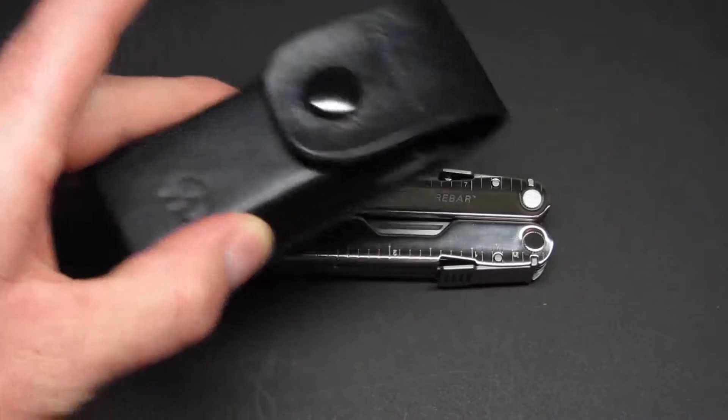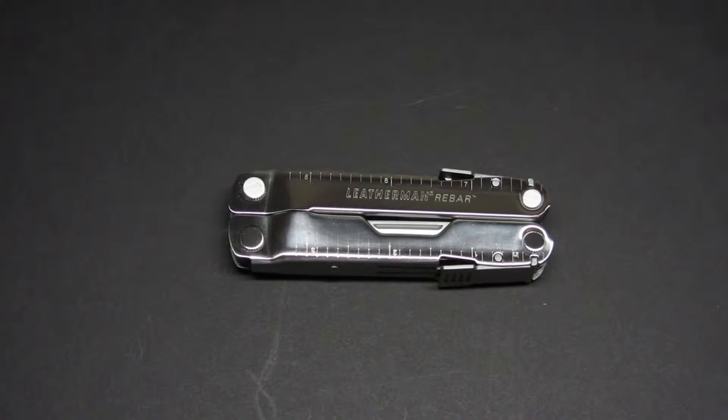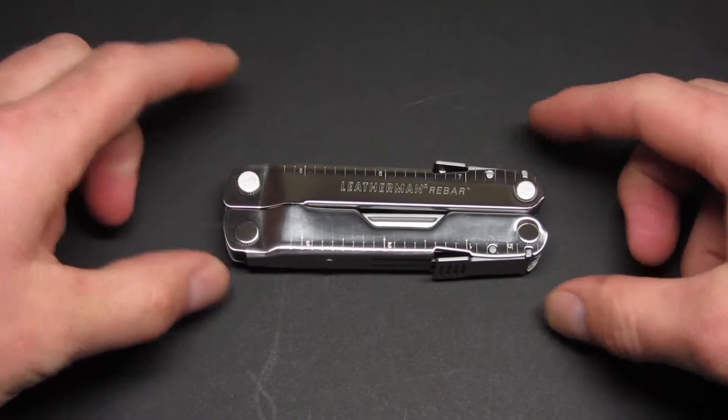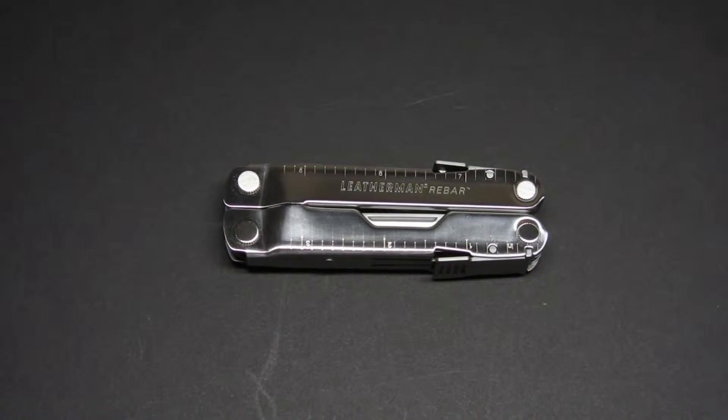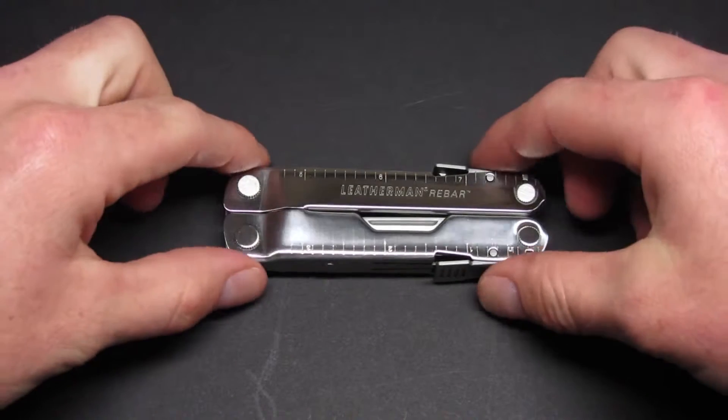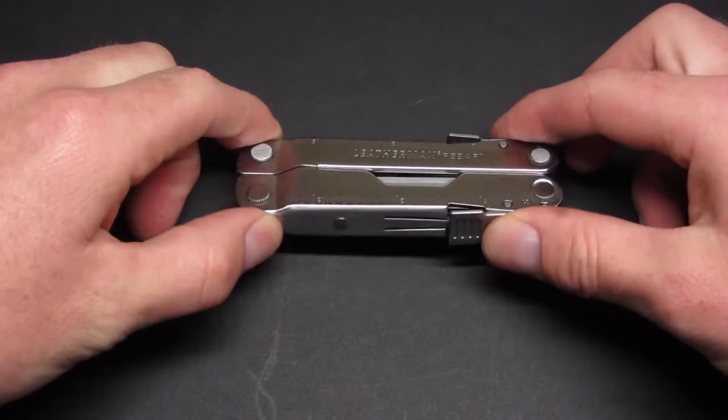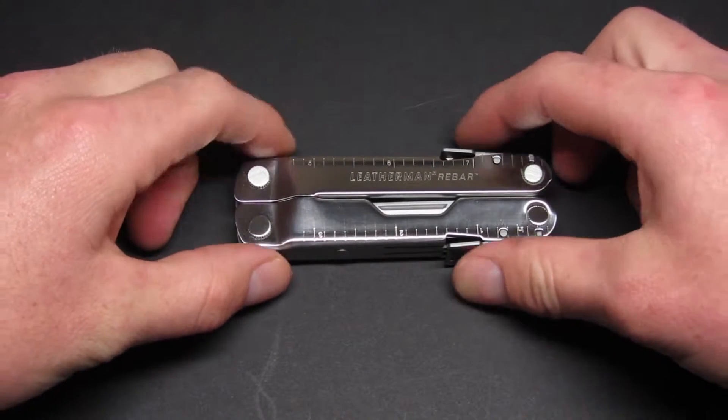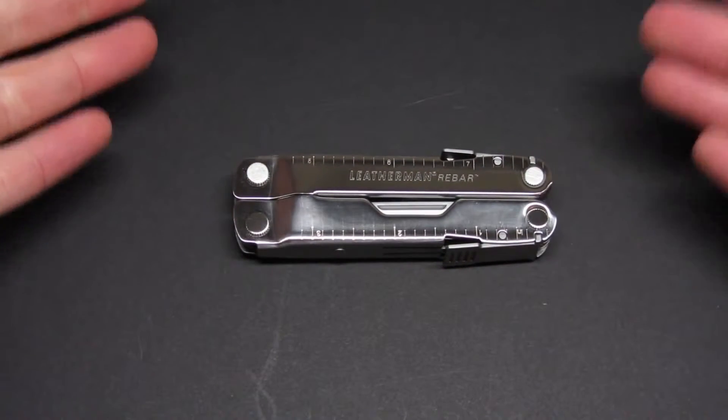I actually did a trade on sheaths with another YouTuber, so this one's going out to you if you're watching. But anyways, really cool multi-tool. What this one basically is is a miniature-size Super Tool 300. They just made it smaller, made it a little bit less heavy duty and more compact.